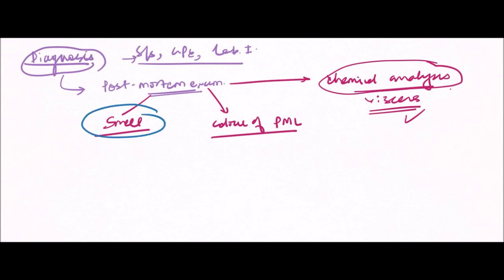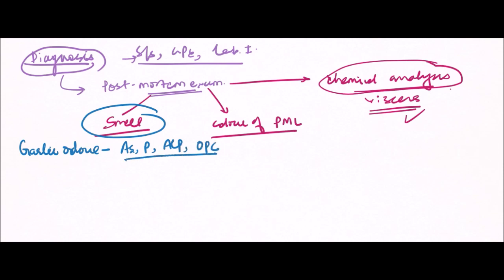The type of smell given by certain poisonous substances is important for UG, PG, and various entrance examinations. First is the garlic odor — this odor is given by arsenic, phosphorus, aluminum phosphide, and organophosphorus compounds. These are the compounds responsible for a garlicky odor.